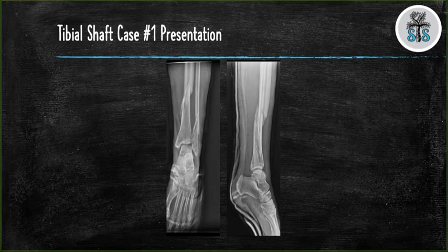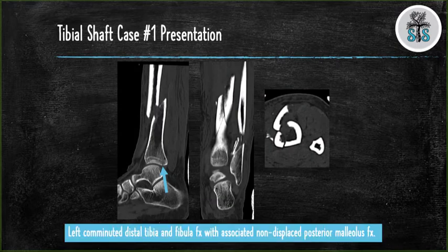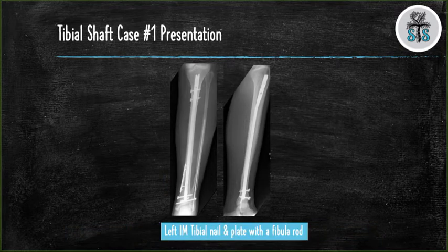Time for the first case. How would you read these x-rays? We have two views of the left tibia and fibula demonstrating a displaced comminuted spiral distal third tibial shaft fracture with a comminuted distal fibula fracture. A CT scan was ordered which demonstrated a non-displaced posterior malleolus fracture. This fracture was fixed with an intramedullary nail of the tibia with a side plate and a fibular rush rod.